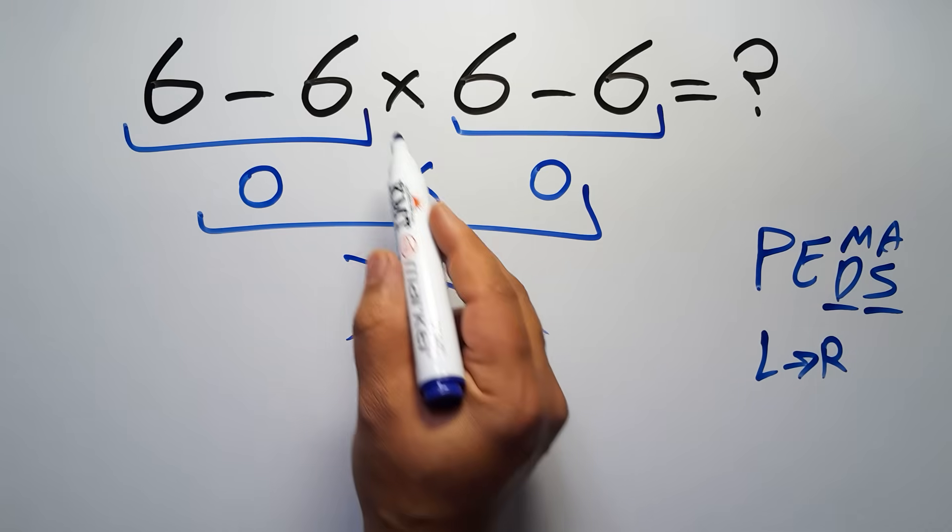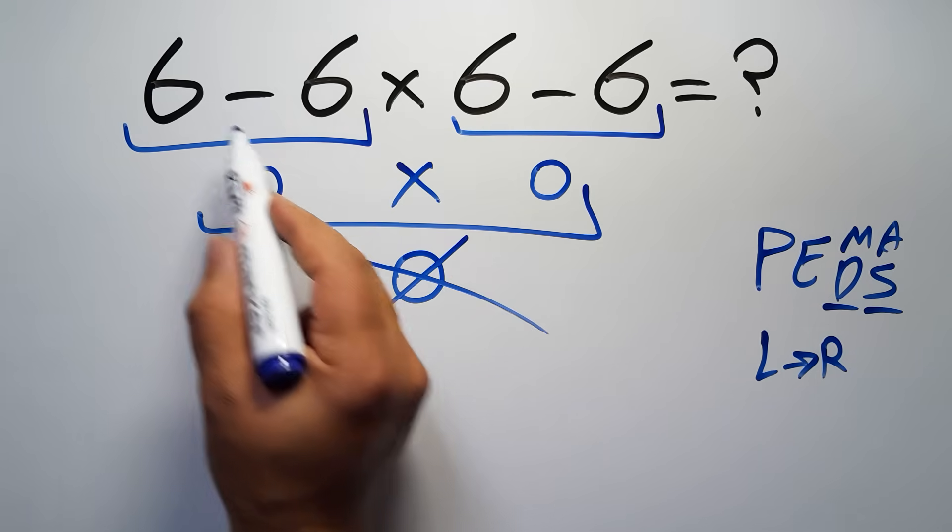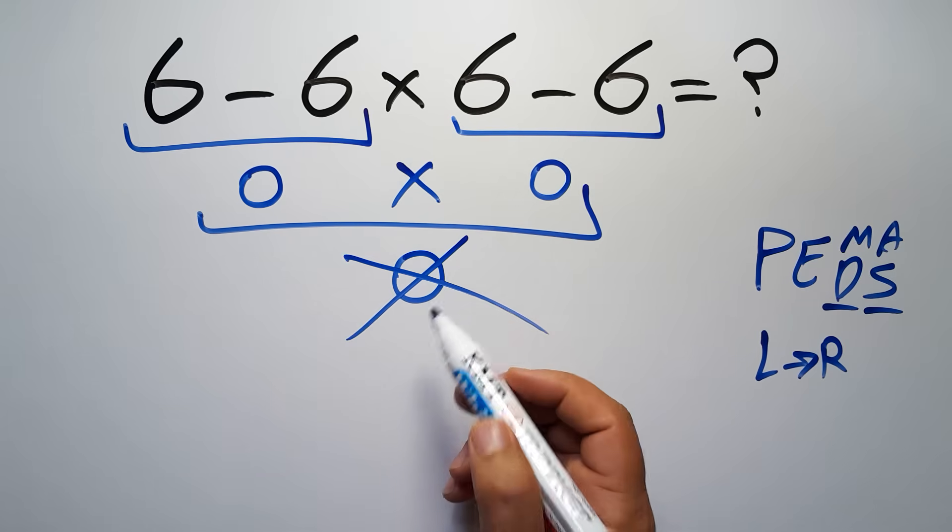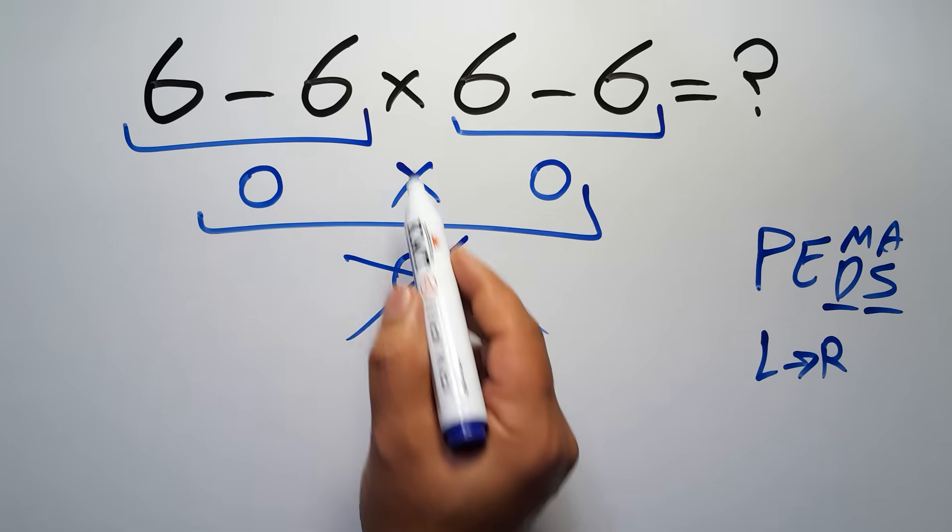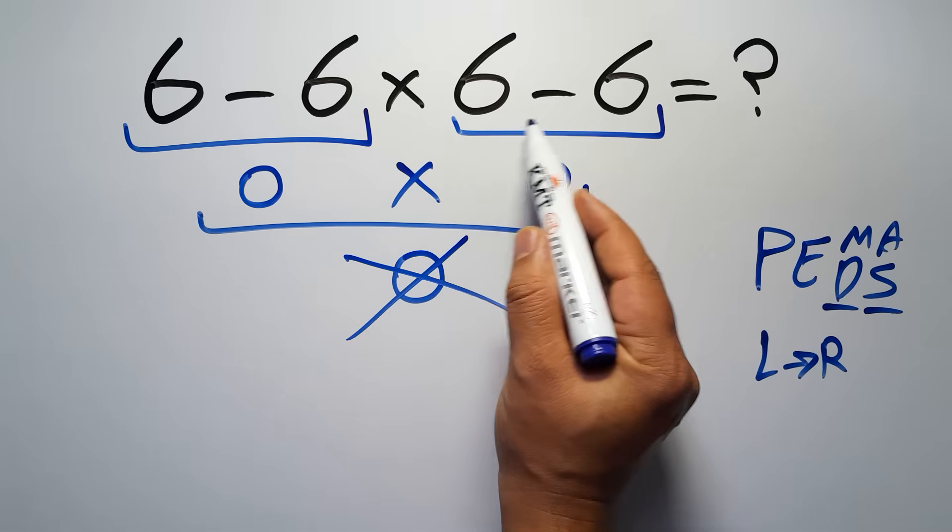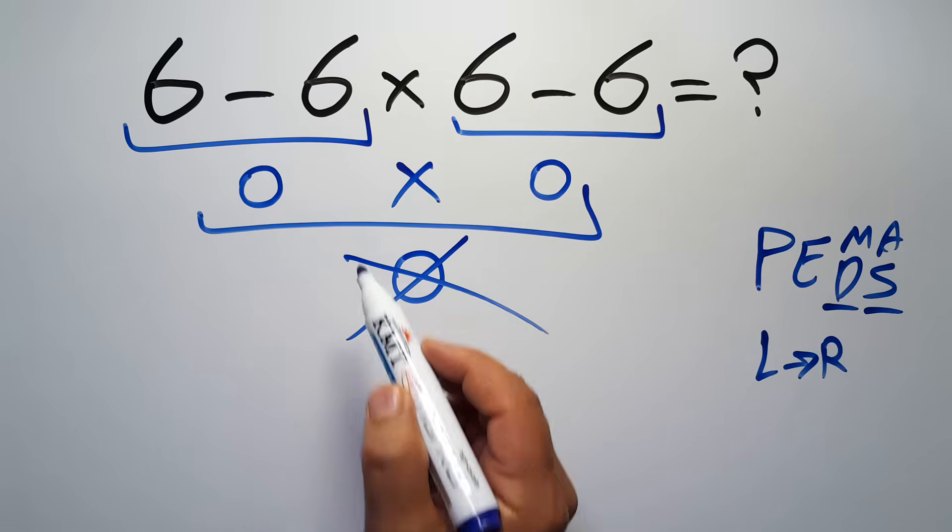So here first we have to do this multiplication, then this subtraction, and finally this subtraction. If we do this subtraction before this multiplication, or if we do this subtraction before this multiplication, it is wrong.